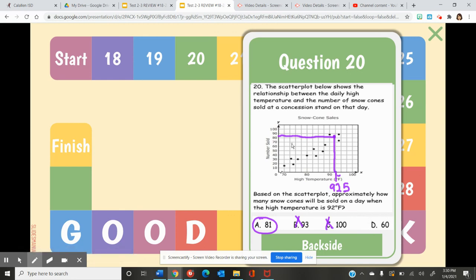And then we have D at 60. So here would be where that snow cone, the number of snow cones should be. So again, that's also wrong. And again, in the end, our answer again is 81.